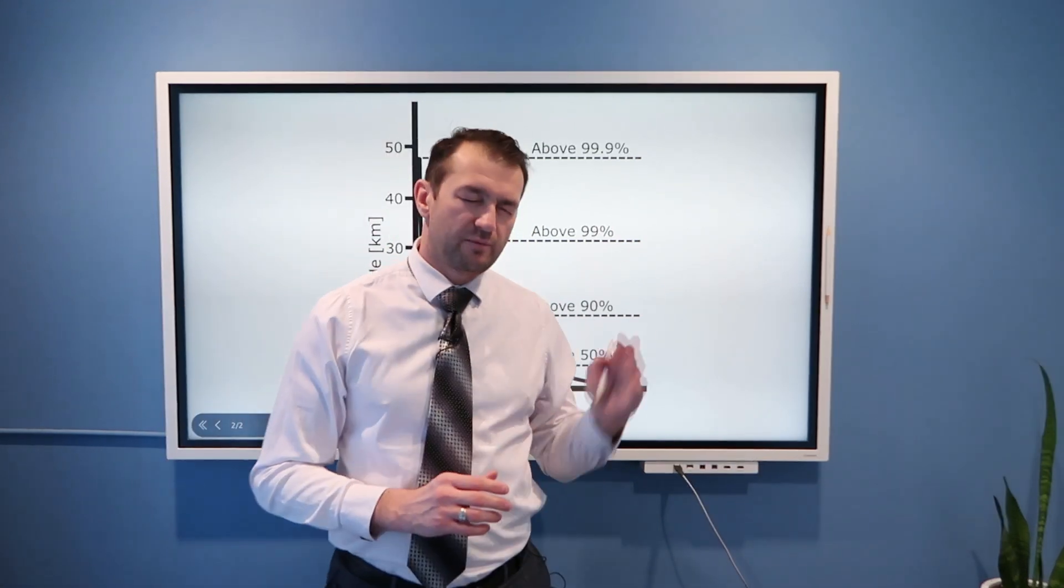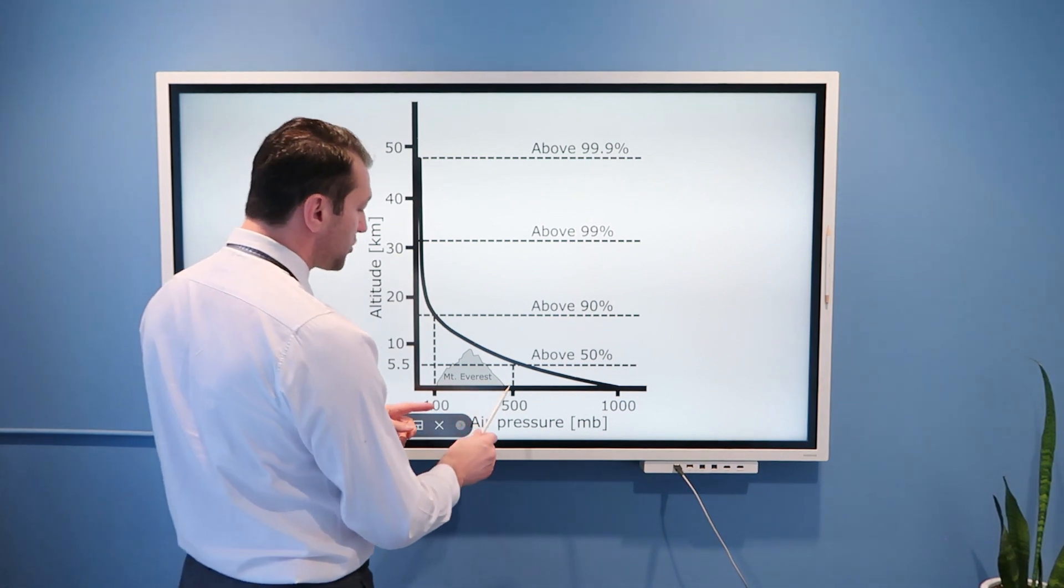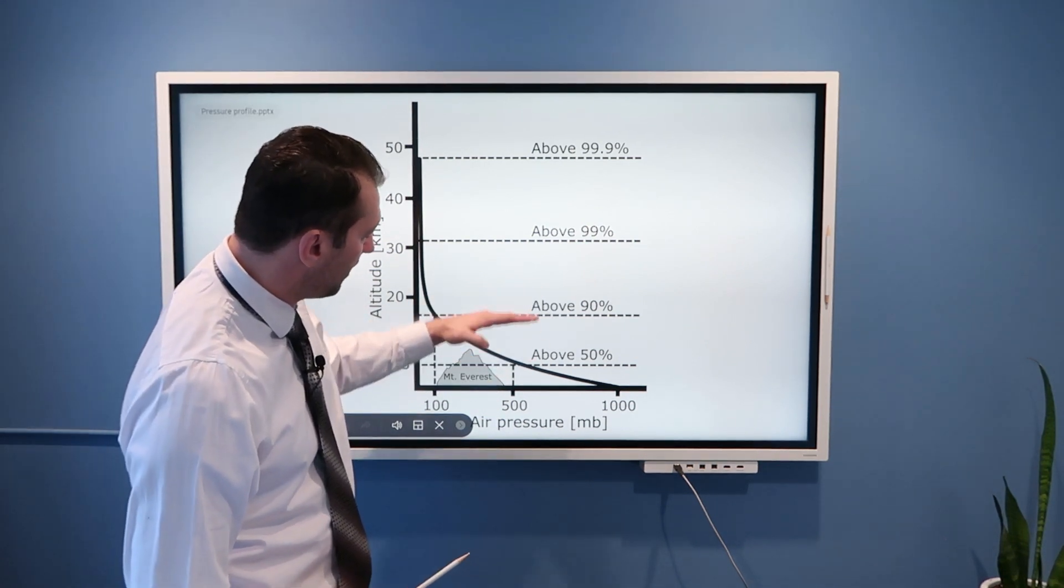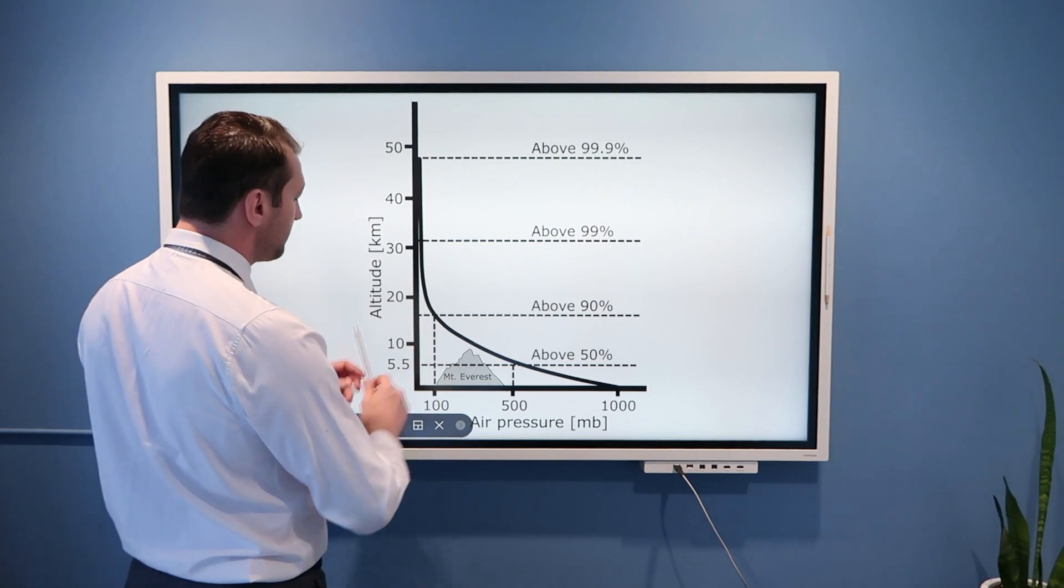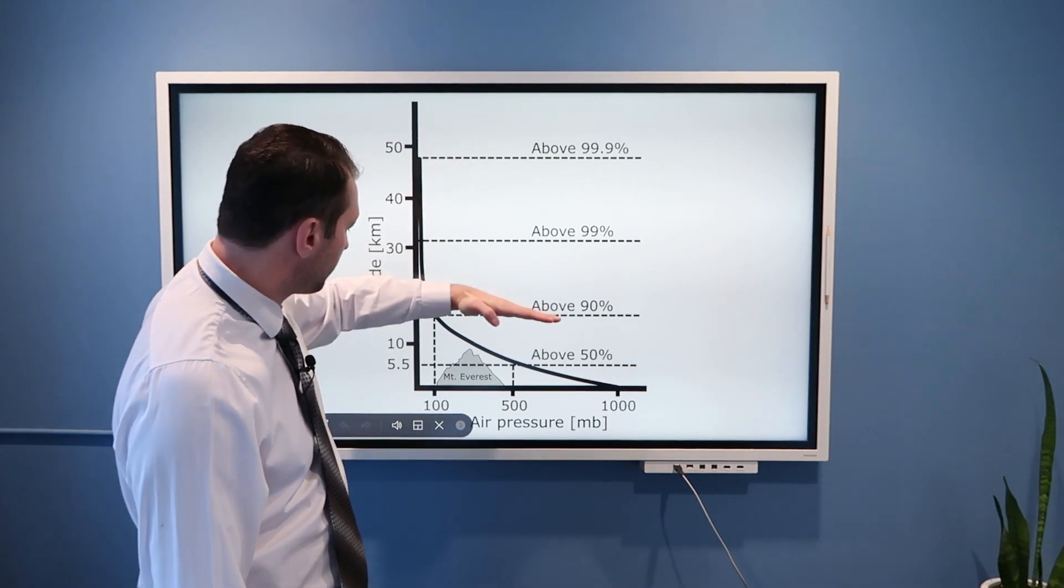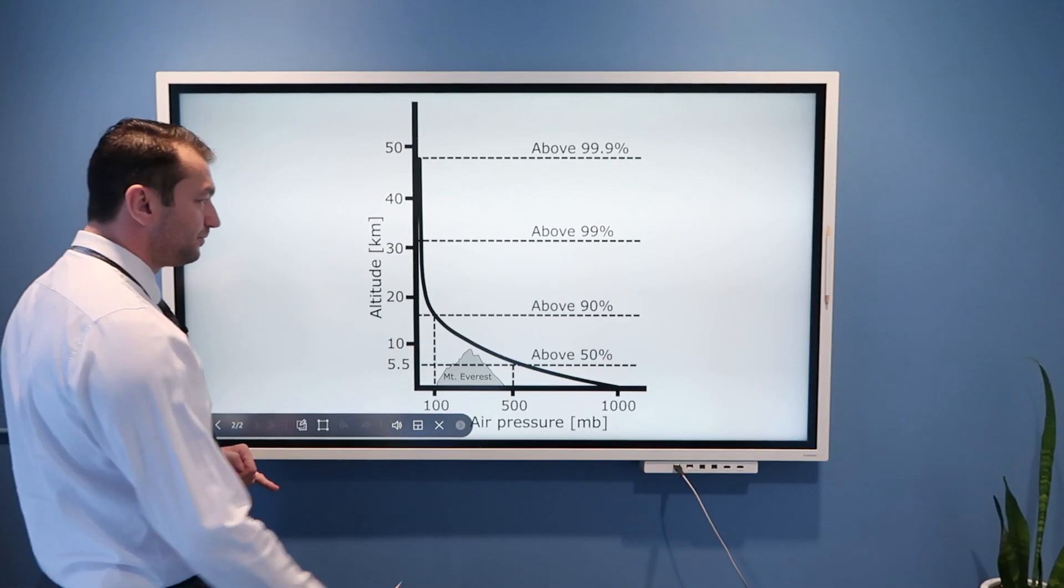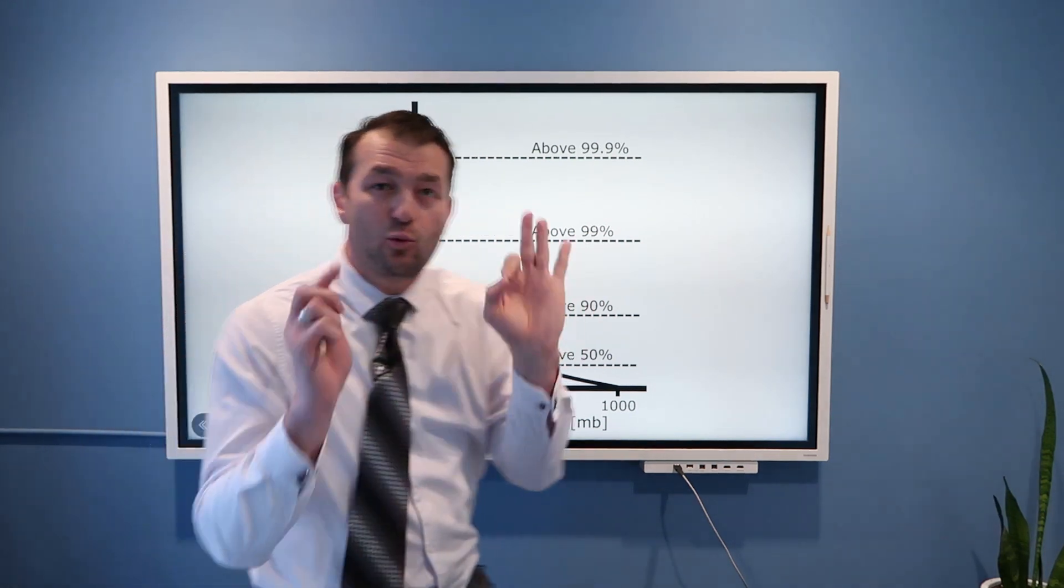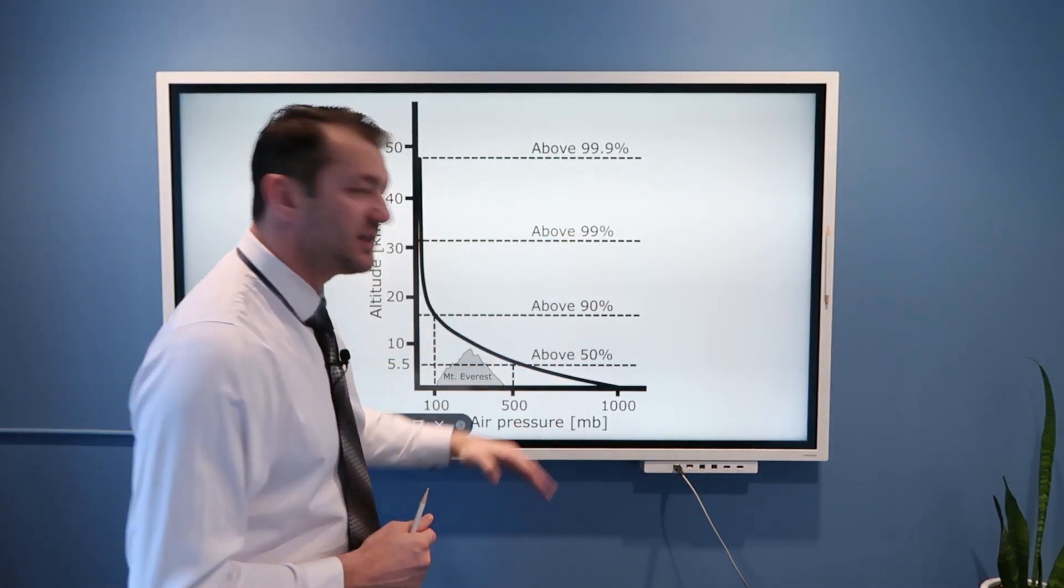From my previous slide, you also saw that pressure is related to the mass of air. So, when pressure is half of the value of the surface pressure, that means half of the mass of the atmosphere is above that level, half of the mass of the atmosphere is below that level. So, pressure of 100 millibars is approximately 18 or so kilometers. That means only 10% of the mass of the atmosphere is above that height, and 90% of the mass of the atmosphere is below 18, 19 kilometers.